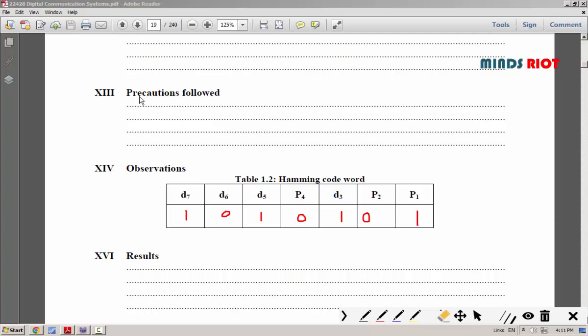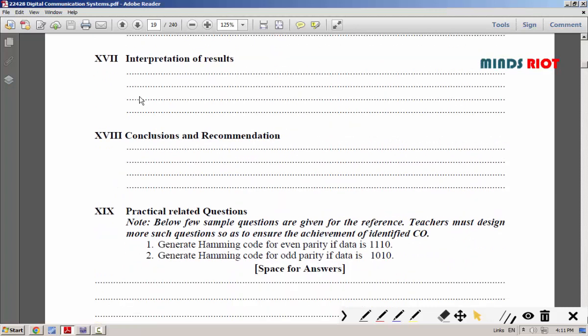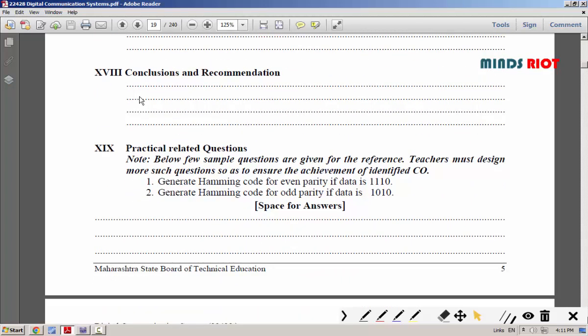Simultaneously, you can check for another one. In this, the below questions are given. Again, different examples you can solve for it. Observe the parity bit and you can generate the Hamming code for the given data bit.